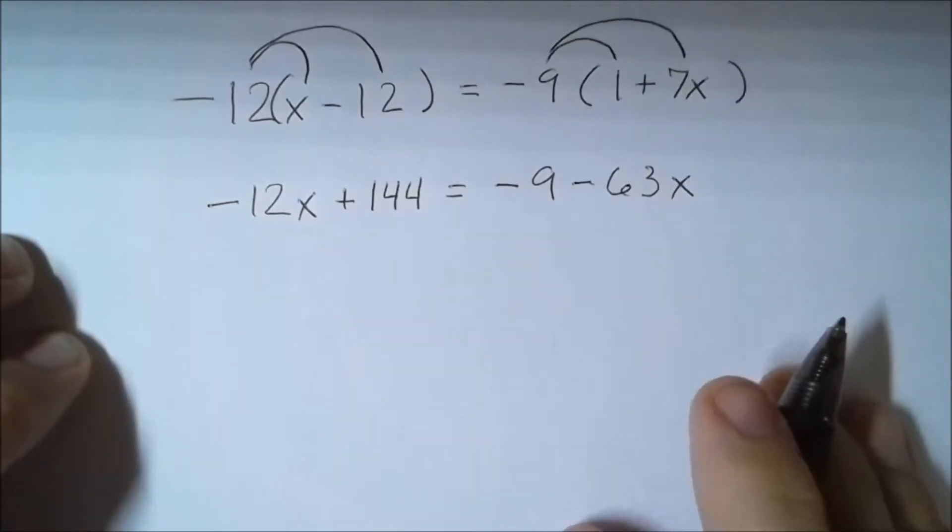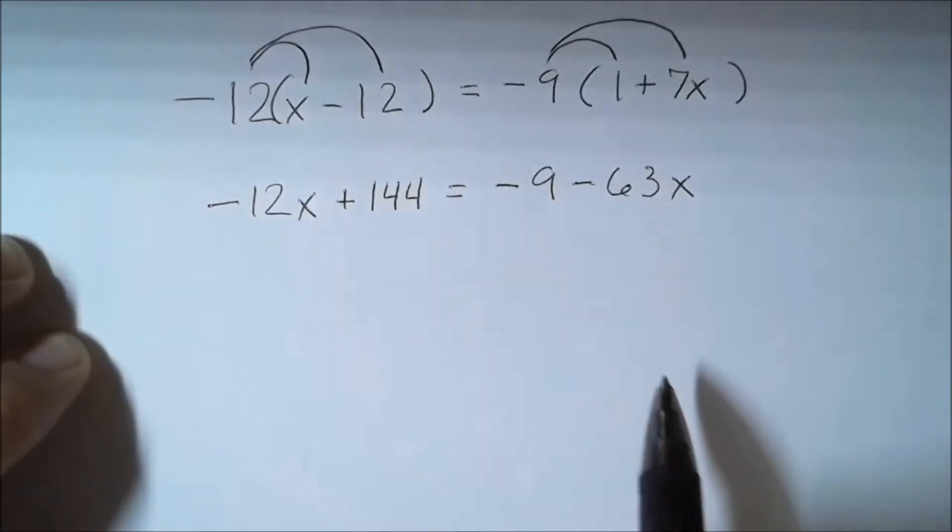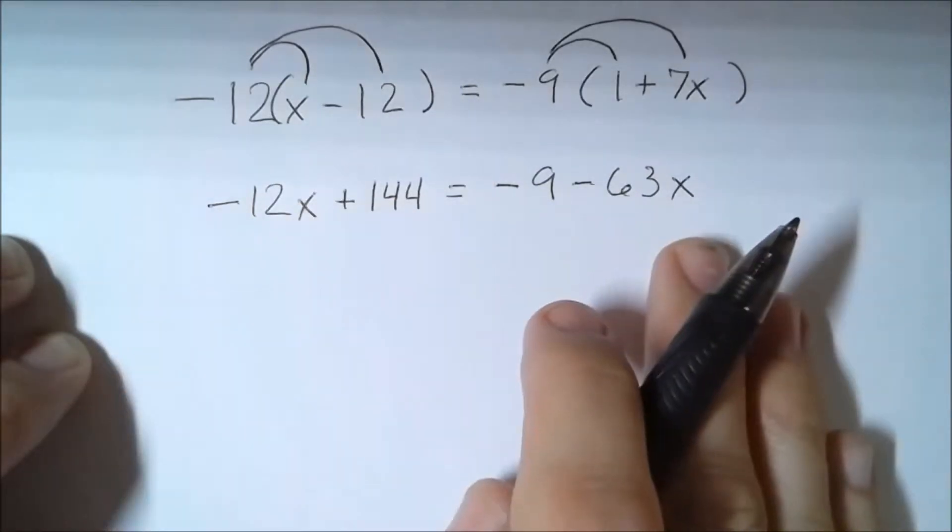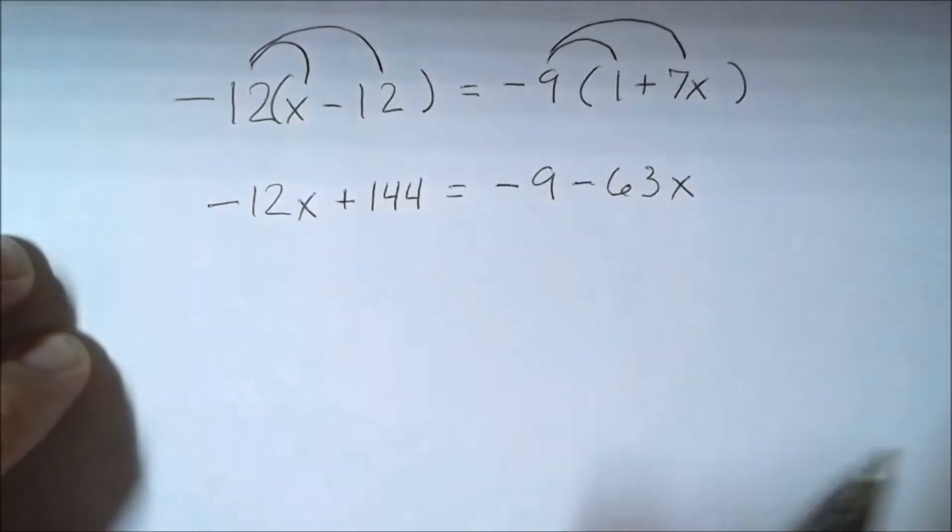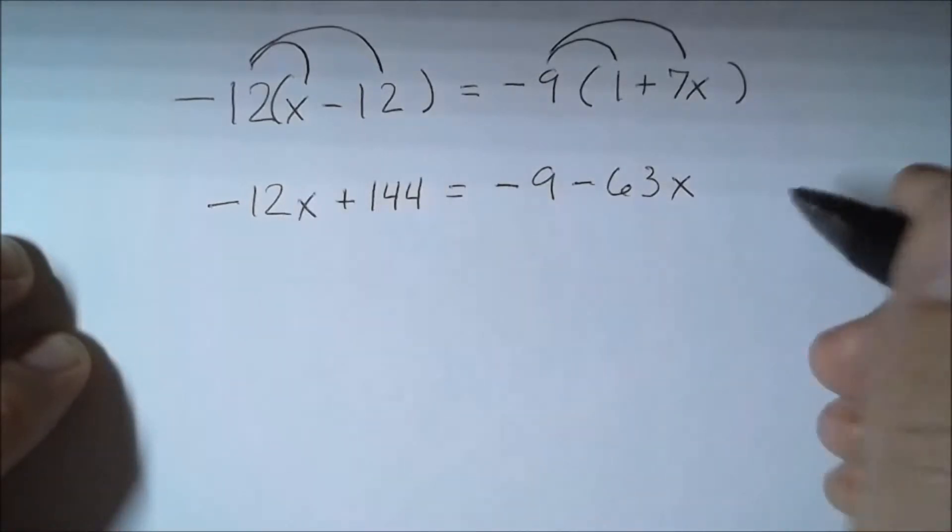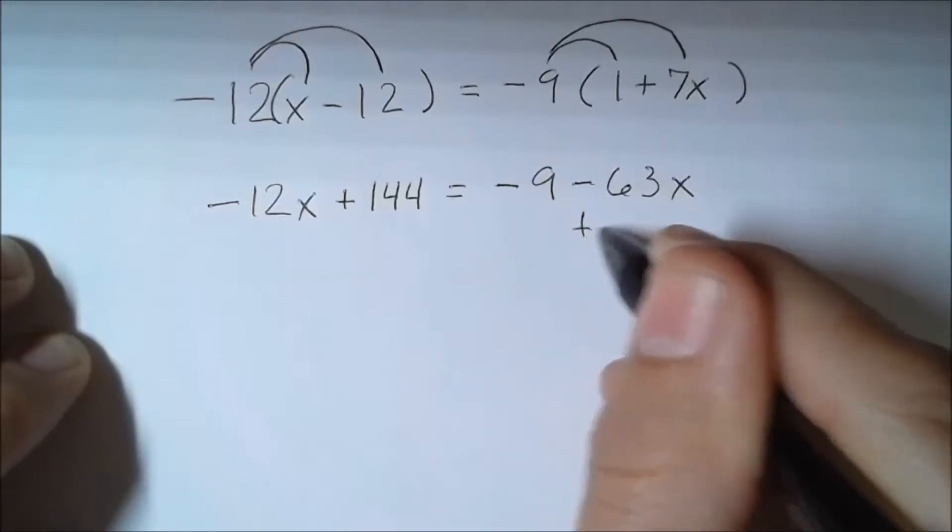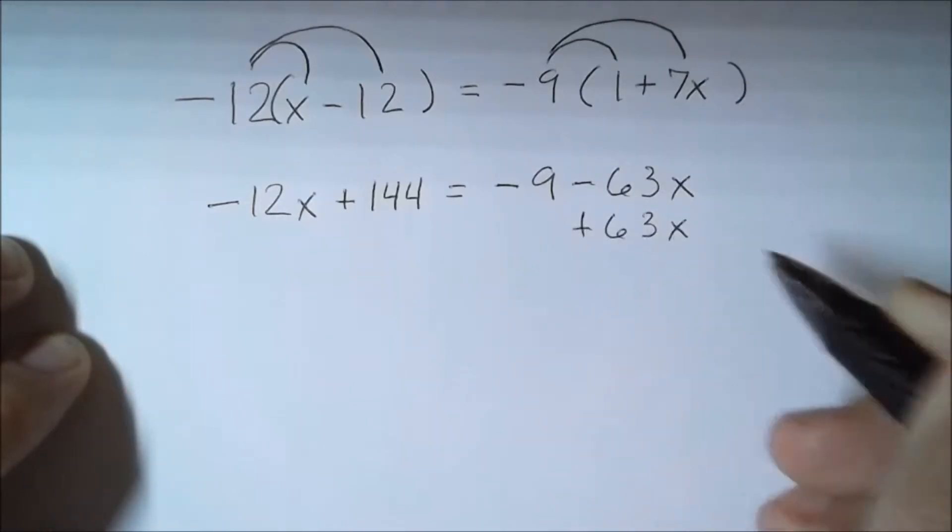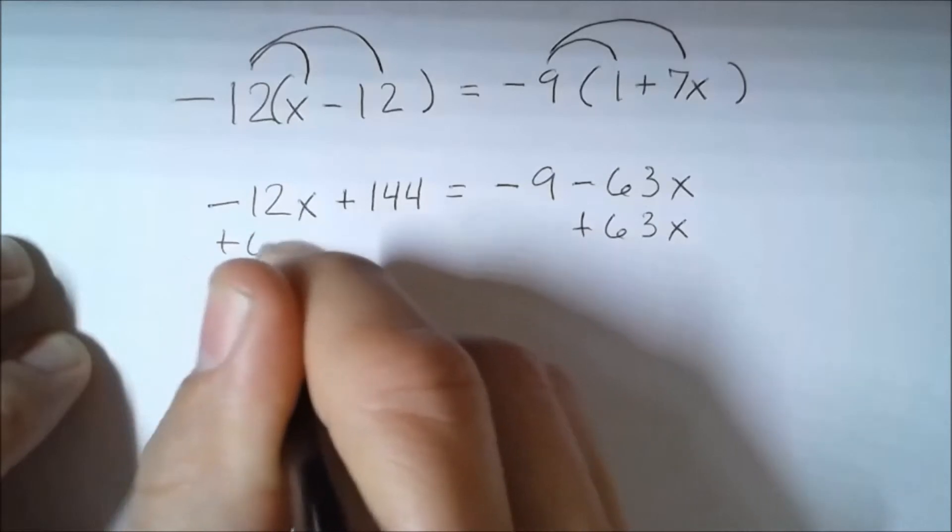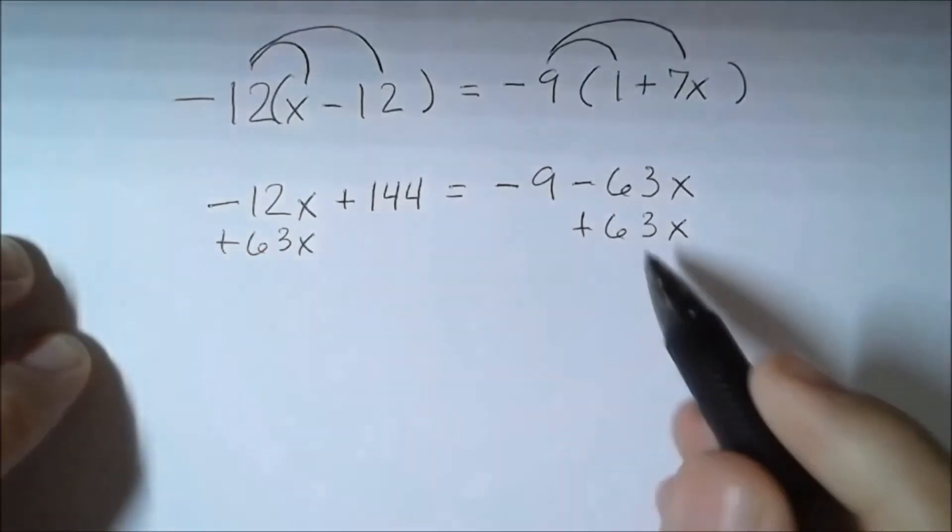Once I'm done here, since there's no like terms to combine on either side, I want to move all my variables to one side and all my numbers to the other. Now what I want you to keep in mind is we want to keep the variable positive. So if we want to keep the variable positive, we can do so by adding 63x to both sides. Keep in mind, whatever we do to one side of the equation, we have to balance it out on the other side.